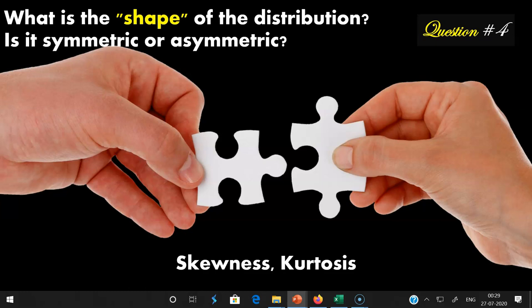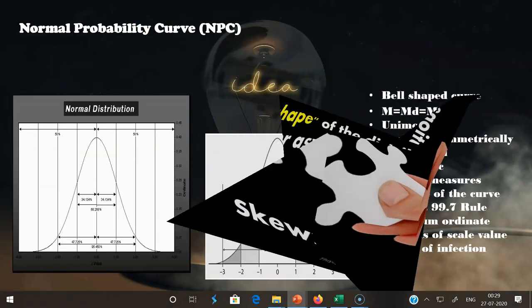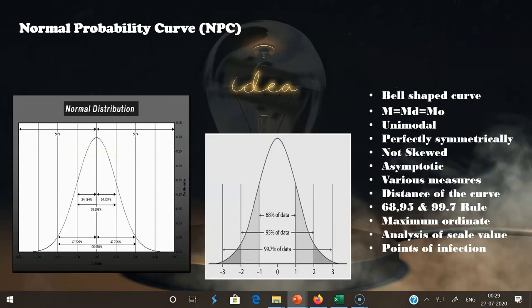The normal probability curve is also called normal distribution. Normal distribution is the cornerstone of modern statistics, highly useful for dealing with continuous probability distributions. It was first discovered by De Moivre in 1733 to solve problems in games of chance. Later it was applied in natural and social sciences by the French mathematician Laplace, and further developed by Gauss. The literal meaning of the term 'normal' is 'average'.